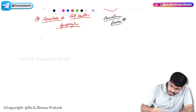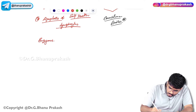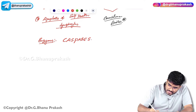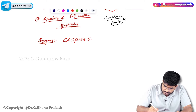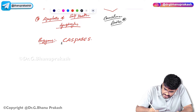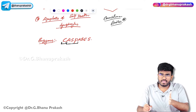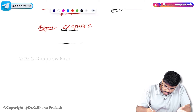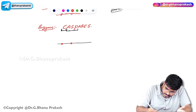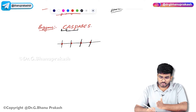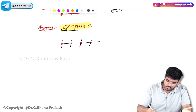In the process of apoptosis, very important enzymes are involved called caspases. What does caspase mean? 'C' stands for cysteine and aspartate — cysteine aspartate-ases. These enzymes are going to break proteins specifically at the aspartate residues. Imagine a protein with aspartate residues; the caspases will come and cleave this protein into small fragments at those specific sites. These enzymes are called caspases and they are involved in apoptosis.